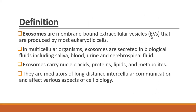Exosomes are the membrane-bound extracellular vesicles that are produced by most eukaryotic cells — all the cells that have a nucleus. So exosomes are extracellular vesicles produced by cells. In multicellular organisms, exosomes are secreted in biological fluids like saliva, blood, urine, and cerebrospinal fluid. So the definition is now clearer: exosomes are produced by nucleus-containing cells and secreted into body fluids like blood, saliva, or urine.